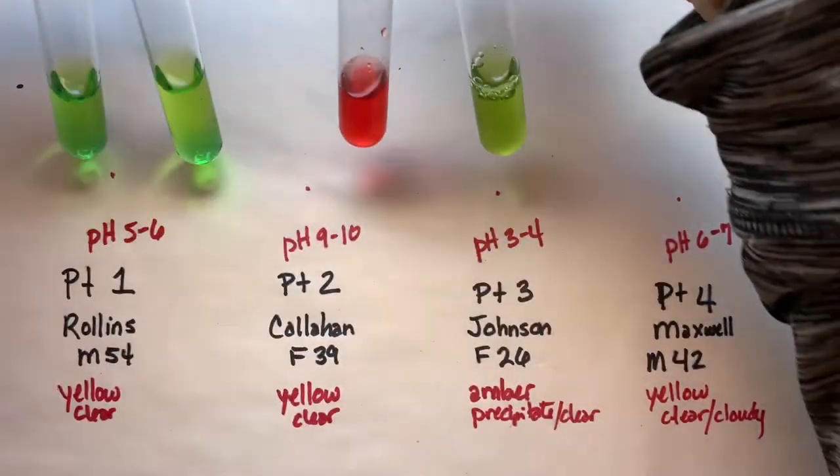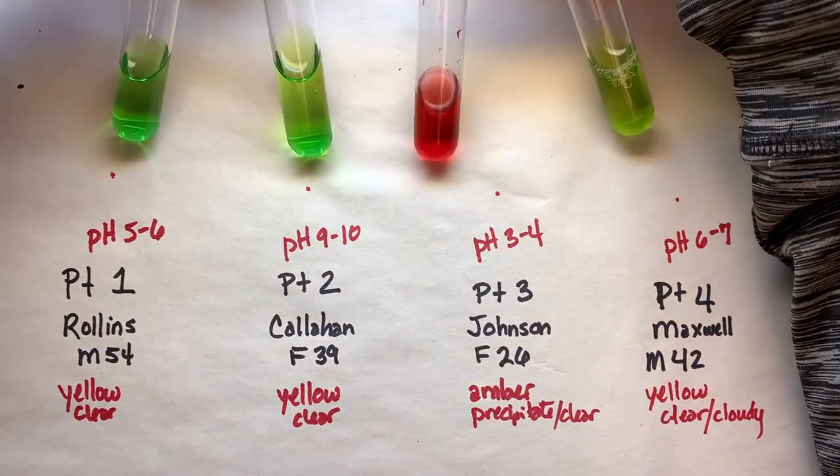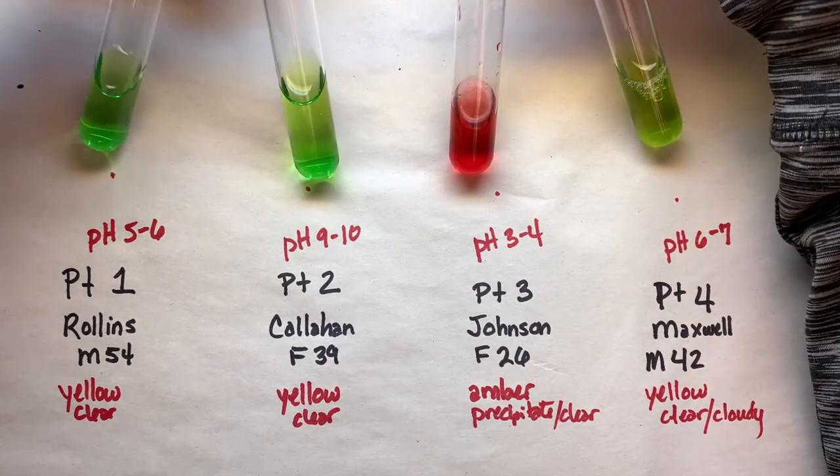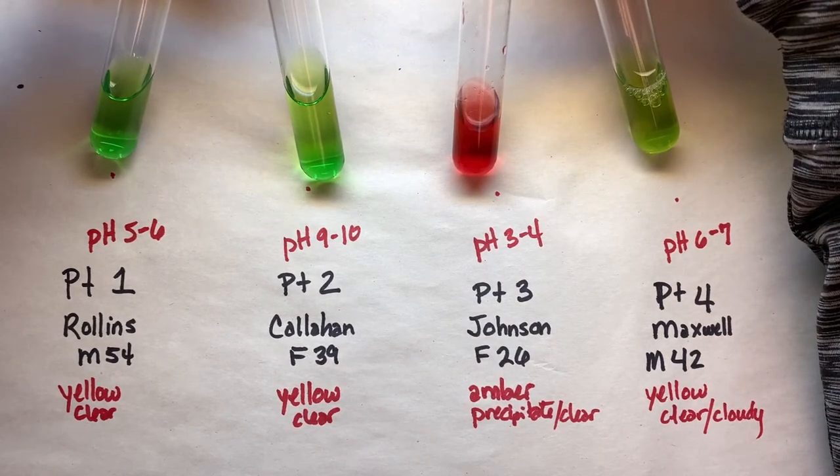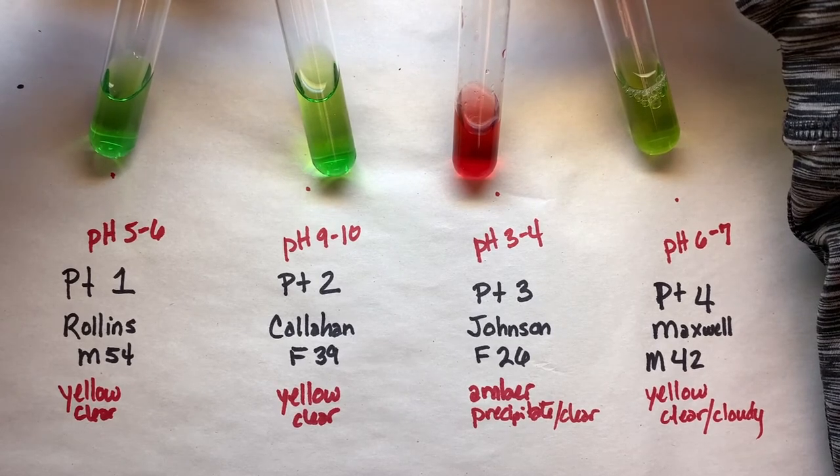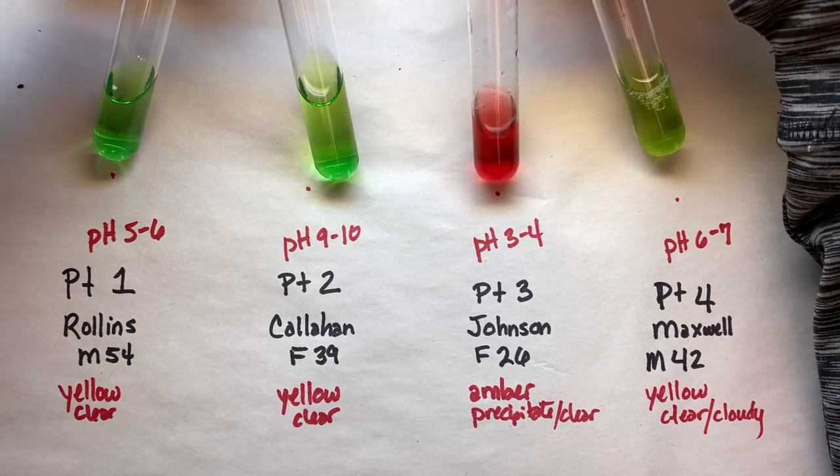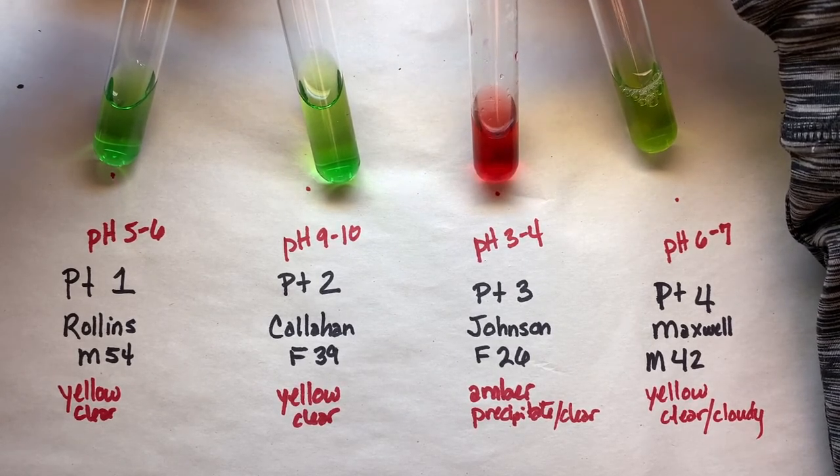Let's look at all four of those together. For each patient, patient one and two and patient four are all negative for protein using Biorett. And patient number three is positive with that red.